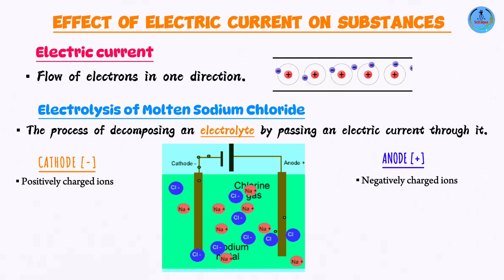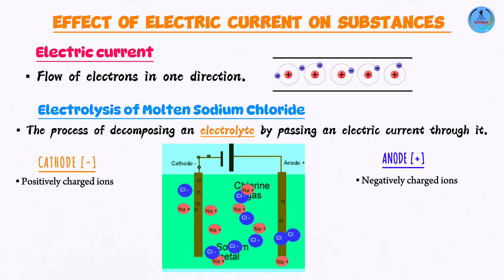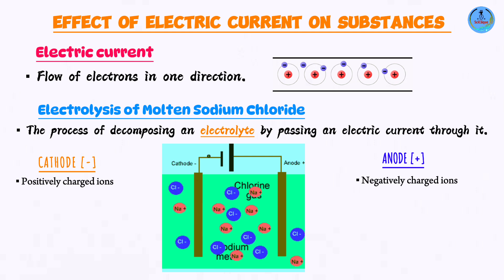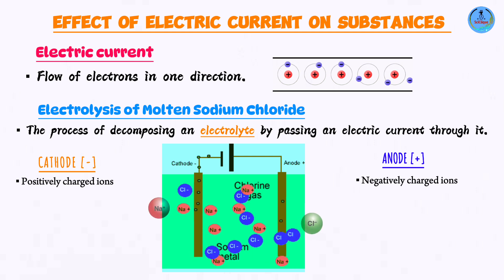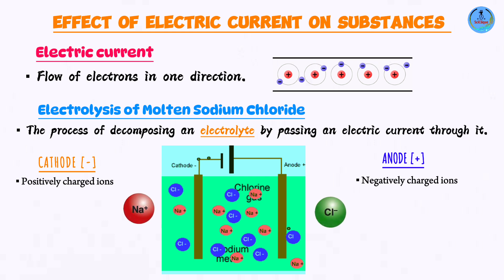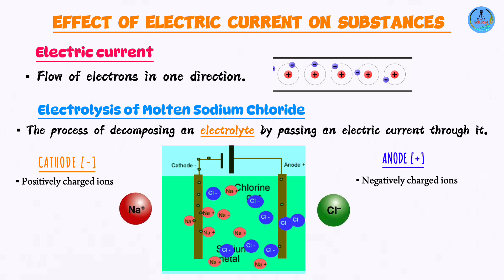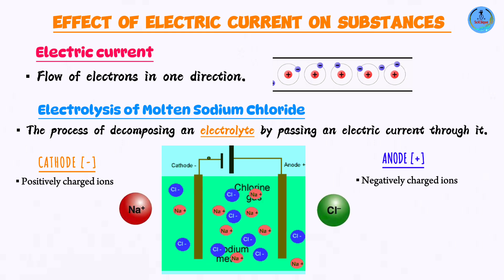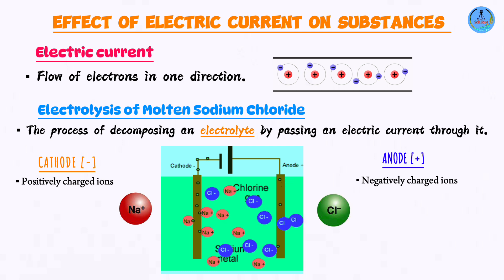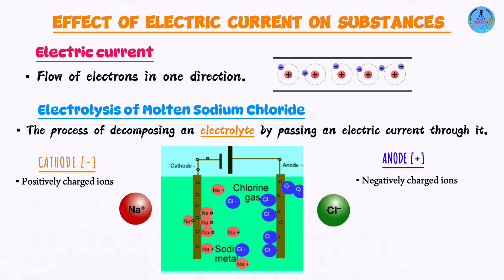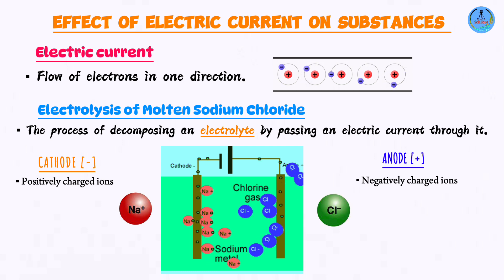Opposites attract. You're going to have the positively charged sodium ions getting attracted towards the negatively charged cathode, so they are going to move towards the cathode. The chloride ions are negatively charged, so they are going to move towards the anode.